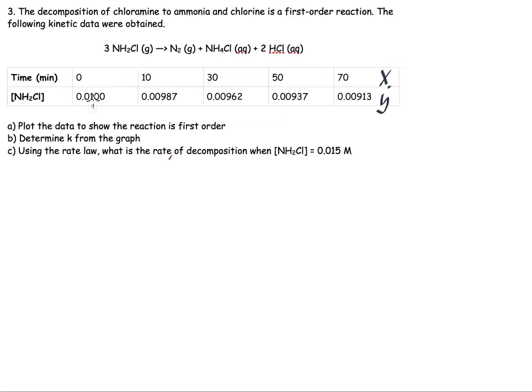So 0.01 would be here, 0.00987 would be here, and so on. And this should be a linear graph where the slope is equal to minus k, and so from the slope we can find out what the elementary reaction rate constant is.